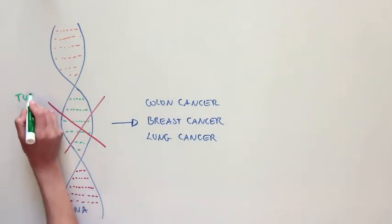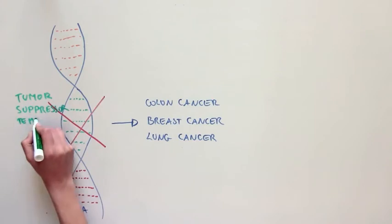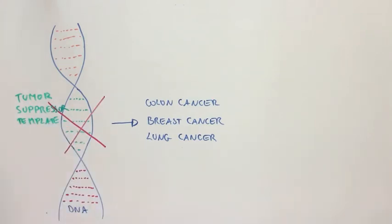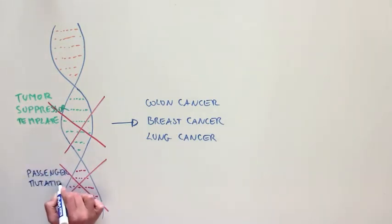But oftentimes, when cancer cells delete tumor suppressor templates, they also delete the DNA around that provides the template for other proteins. We call the deletion of these other templates, passenger mutations.